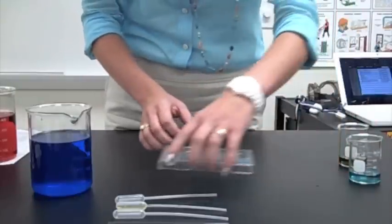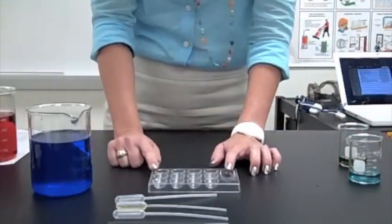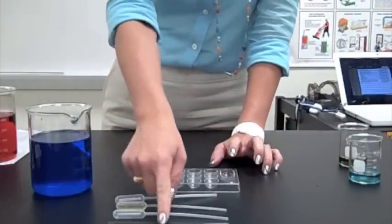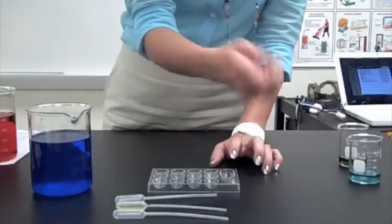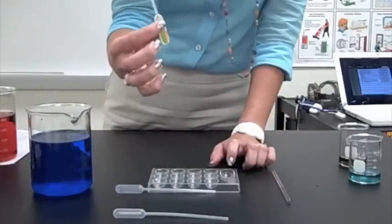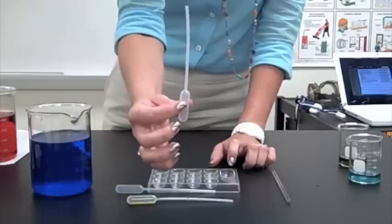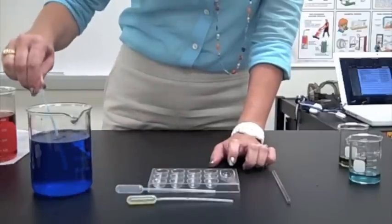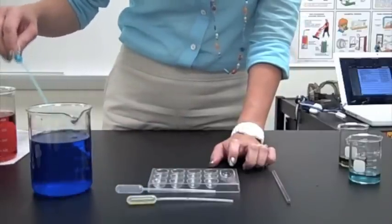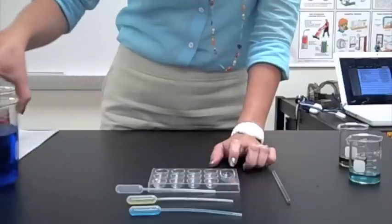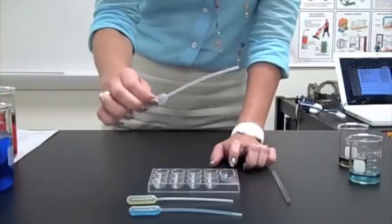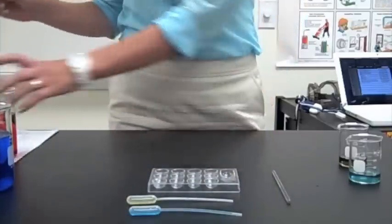Now, we're going to move on to the micro scale techniques, which is where we need the 12 well plate, our three pipettes, and our glass stir rod. I already have the yellow one slightly filled. This is the blue one that I used a second ago. I'm going to use that to get some more blue solution. And then I'm going to use the one that I haven't used at all yet to get our red solution.